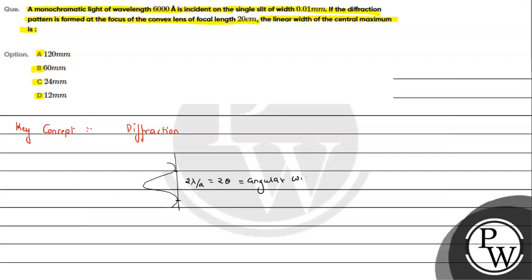We need linear width, so what do we know for linear width? Just multiply by distance. Since s equals rθ, we need to calculate that value.